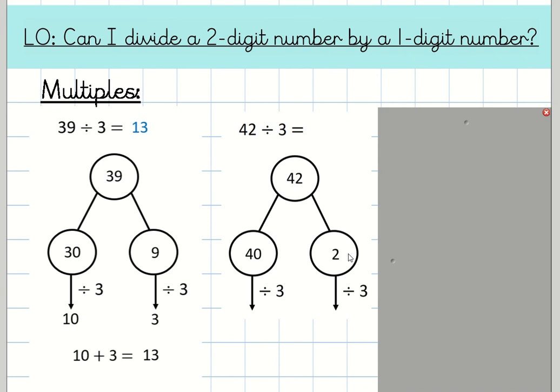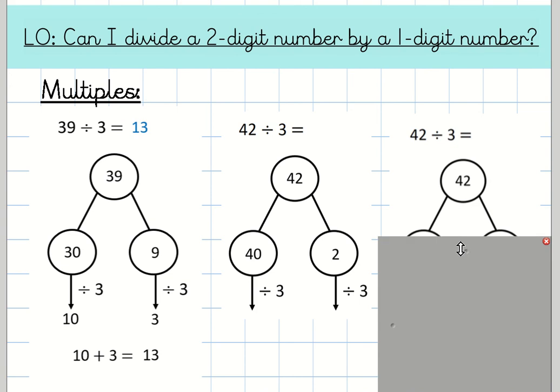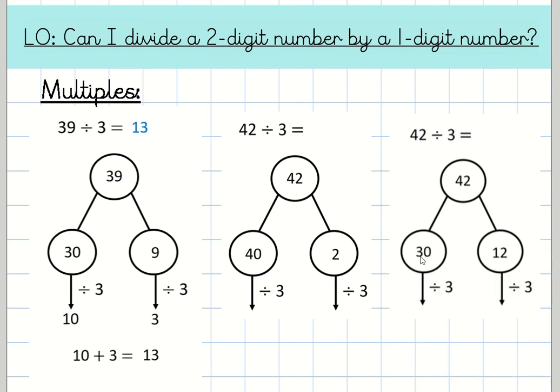So can you think of two numbers that we can partition 42 into that are both multiples of 3? Pause the video and have a think. What I've done is partition it into 30 and 12. 30 plus 12 is 42, and I know both of those are in the three times tables. So 30 divided by 3 is 10, and 12 divided by 3 is 4. And if I add 10 plus 4, I get 14, which is the answer to 42 divided by 3. So this is another way of doing it. It's really important to be able to see different approaches to answer similar questions.